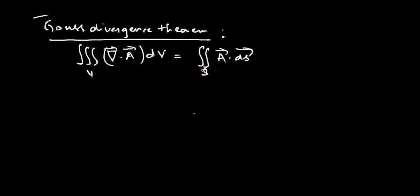The surface S is a closed surface which encloses the volume V — it is like a ball. The outer surface is a closed surface enclosing a certain amount of volume inside it. So the volume integral of the divergence of the vector field A-bar equals the surface integral of A-bar taken over any closed surface S enclosing the volume V.